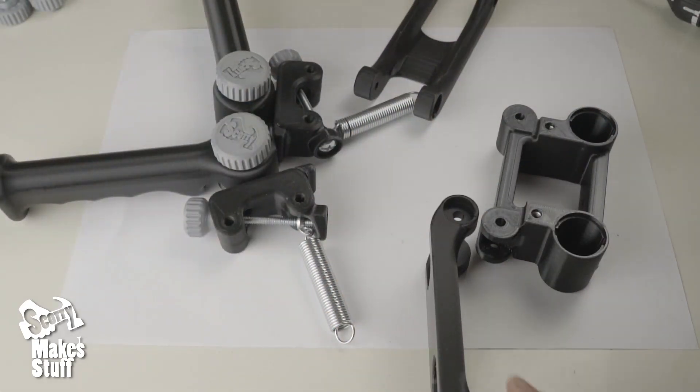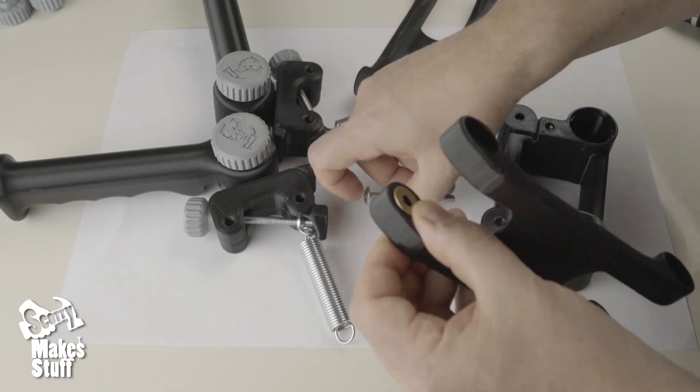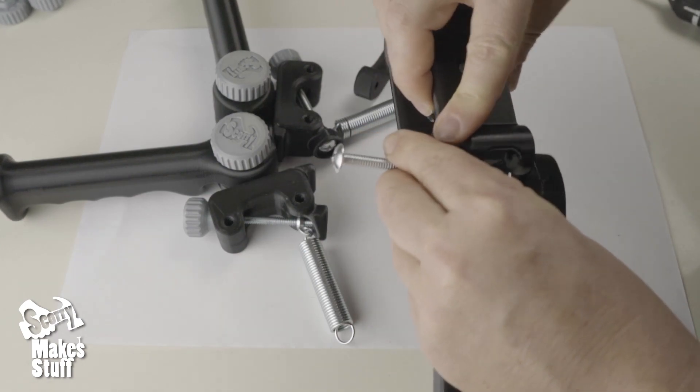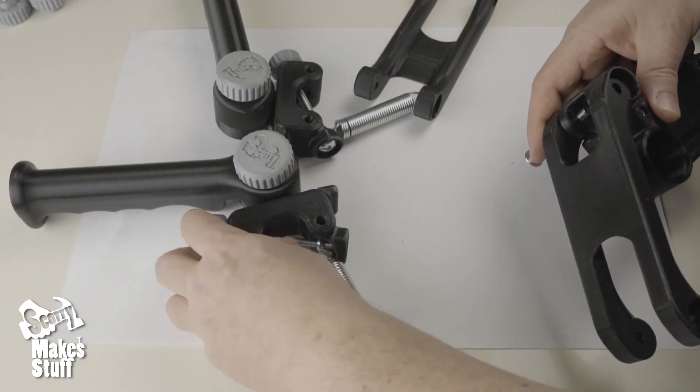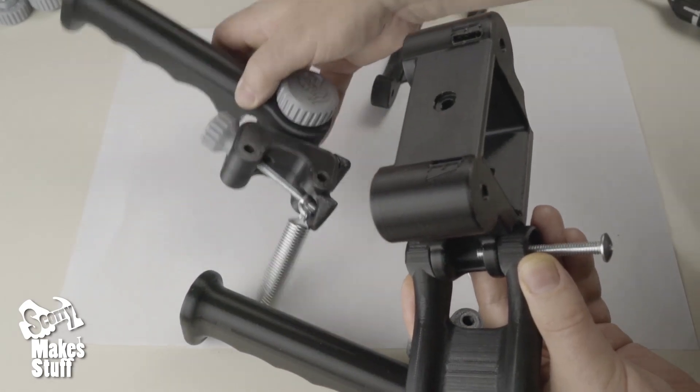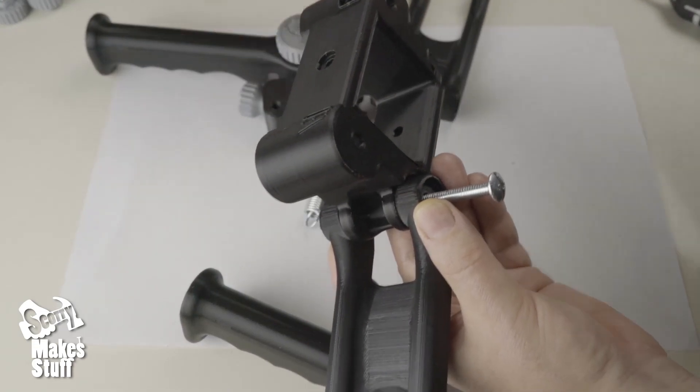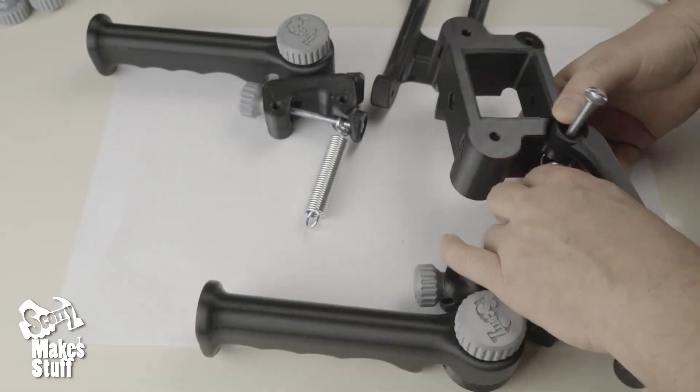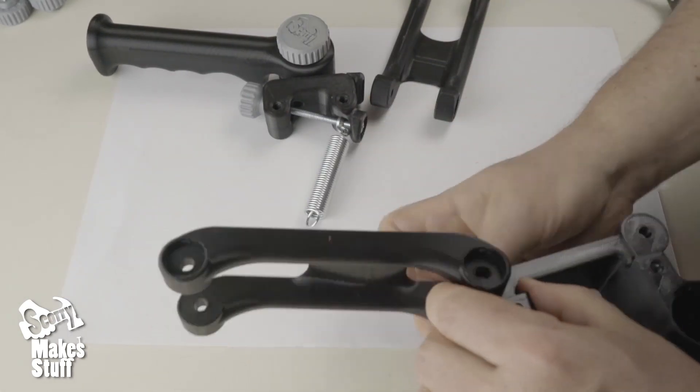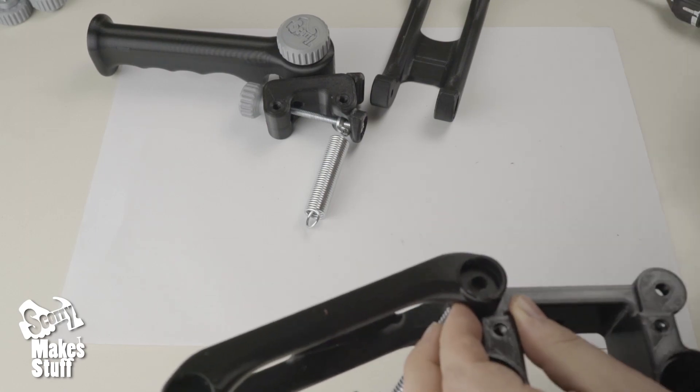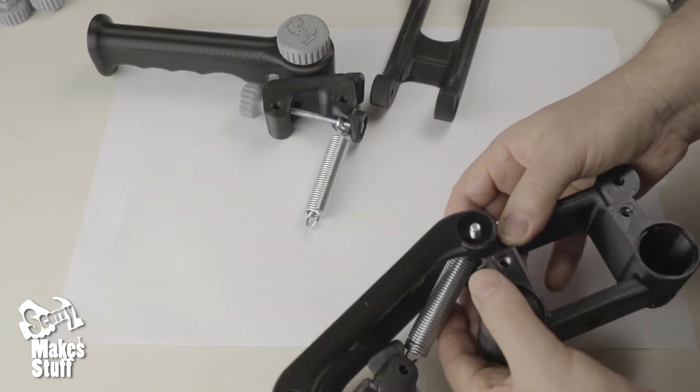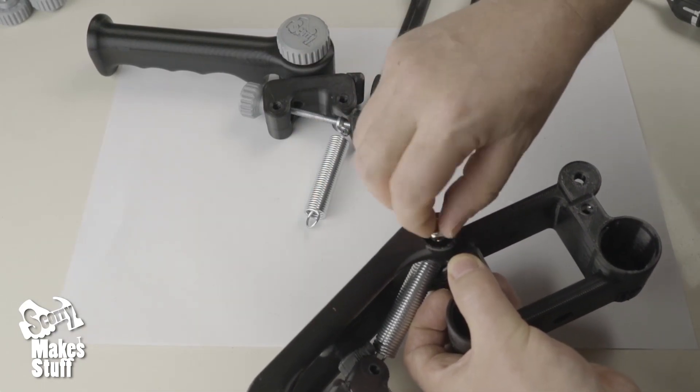Now we'll attach the handle assembly to the gimbal support with the top and bottom arms. Attach the spring to the gimbal support with a two and a half inch bolt. Making sure to place a thin brass washer on each side between the plastic parts. Finally add the nylock nut. We'll tighten them later.